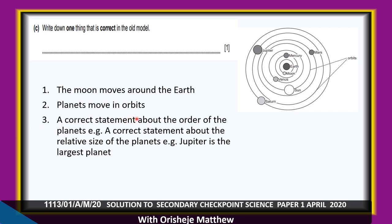A correct statement about the order of planets: Mercury is closest, then Venus, then Mars, then Jupiter. In terms of size, Jupiter is the biggest. This is a similarity with our modern solar system.